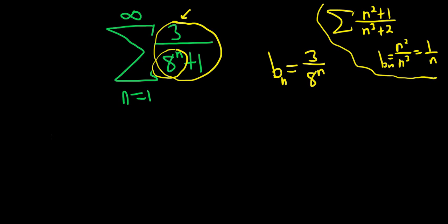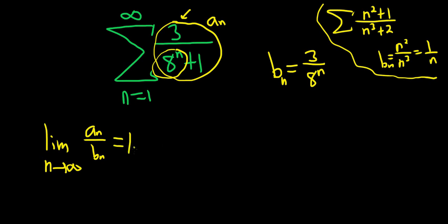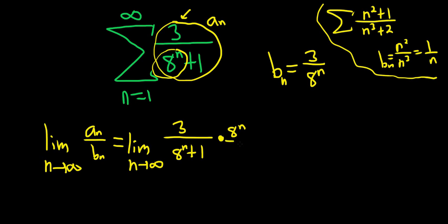Now what you do is take the following limit: the limit as n goes to infinity of a sub n over b sub n. If this limit is finite and positive, then we can use the limit comparison test. So this is equal to the limit as n goes to infinity of a sub n — three over eight to the n plus one — and then we're dividing by b sub n, so we multiply by the reciprocal: times eight to the n over three.